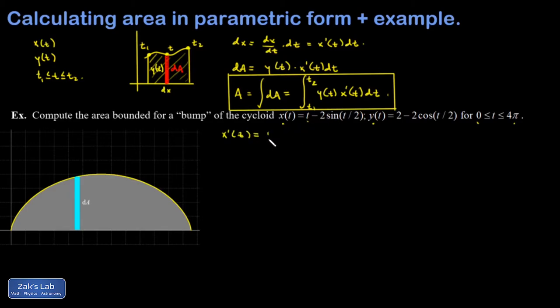I differentiate the t and I get 1, and then minus 2 sin(t/2), so the sine is going to differentiate to cosine. Don't forget about the chain rule here—you have to multiply by the derivative of t/2, which is 1/2. That's going to cancel out that 2, so x' is 1 - cos(t/2).